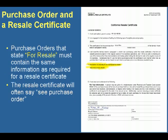Some purchasers utilize a combination of a resale certificate and a purchase order. The resale certificate will contain all of the required elements except for a description of the property. Under the description of the property, it will provide 'see purchase order.' Each purchase order will then indicate whether each individual purchase is taxable or for resale. In this case, both the resale certificate and the purchase order together make a valid resale certificate, and both documents must be retained by the seller to support a claim of sale for resale.